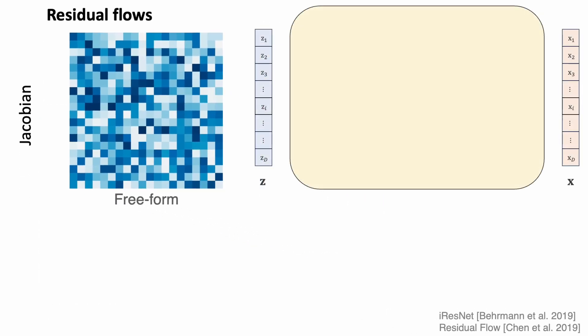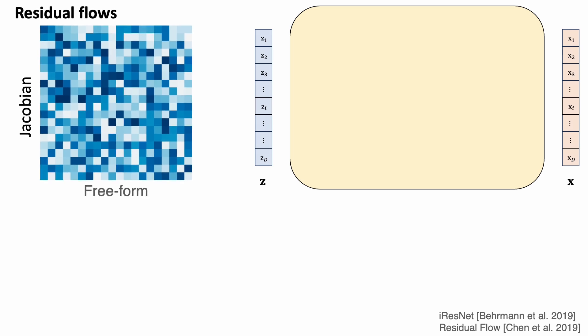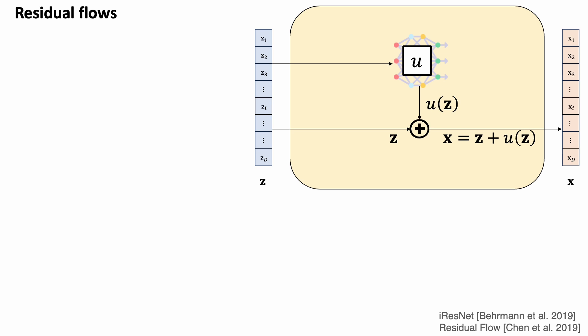The layers in residual flows are very simple. It processes the input z with a neural network u, and add the output u of z back to produce the final output for the layer.